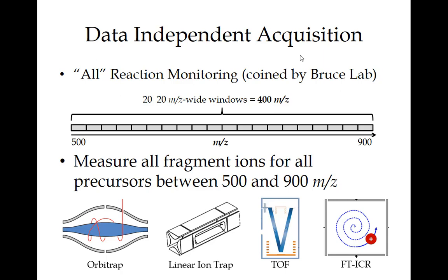The most common platforms for doing DIA are Orbitrap systems and Q-TOF systems, though you can also do it on a linear ion trap — some early manuscripts did, like the Goodless Pacific paper, and a popular paper from Nature Methods in 2004 did it on a linear ion trap as well. You can also do it on an FT-ICR. But the most common platforms you'll see are Orbitrap and Q-TOF. Throughout my science career I've been working with Orbitraps, so I'll be speaking in that context.